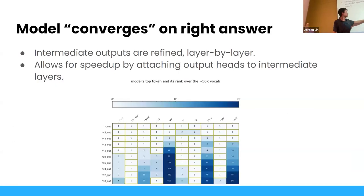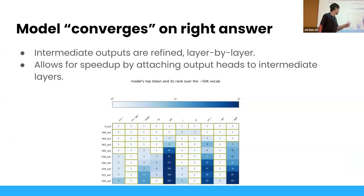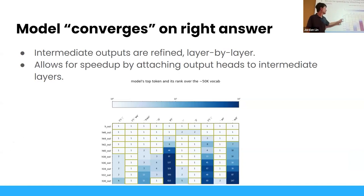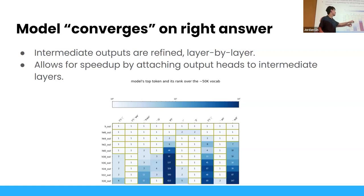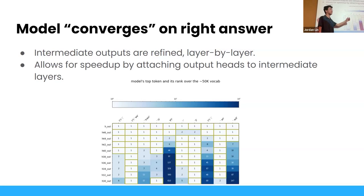Another visualization shows the rank of the unembed for each position — for example, rank 97 means this is the 97th most likely token the final layer would output. We can see that if you sample the second-to-last layer's logits, they basically match the first choice of the final layer. Even pretty shallow in the network, it's already decided on what token to output for that position.